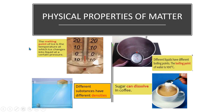The melting point of ice is the temperature at which ice changes into liquid at a certain pressure. We can measure melting point using a thermometer. Different liquids have different boiling points; the boiling point of water is 100 degrees Celsius. Different substances have different densities, and sugar can dissolve in coffee.